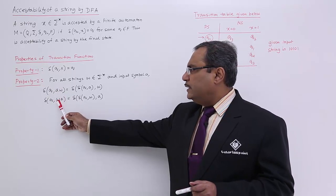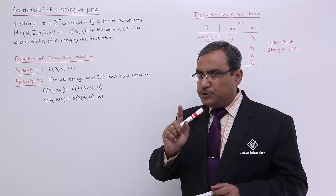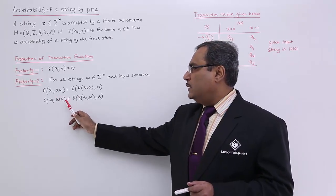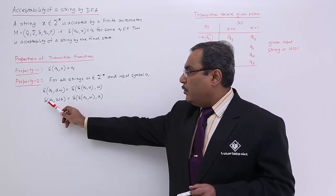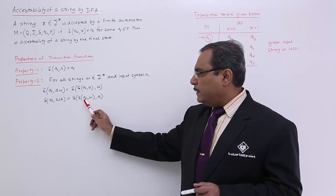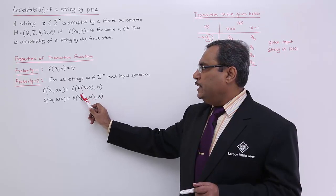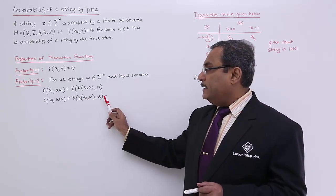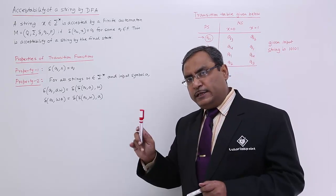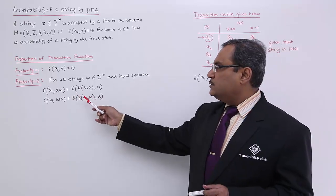Similarly, I could write this in another way: with w followed by a, where w is a bunch of input symbols and a is a single input symbol. So for a given state q, if we apply w we reach an intermediate state, and on that state if we apply a, we reach the final terminating state — the same terminating state in both cases. So in this way property 2 has been depicted.